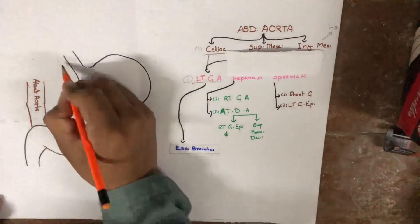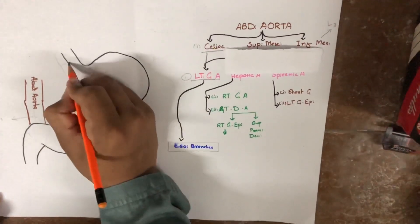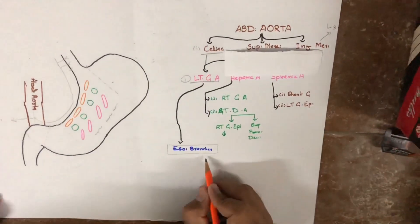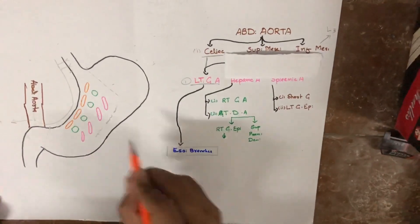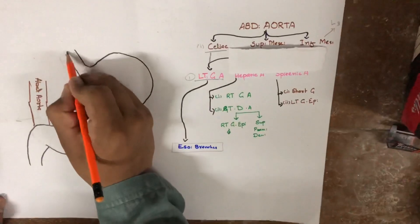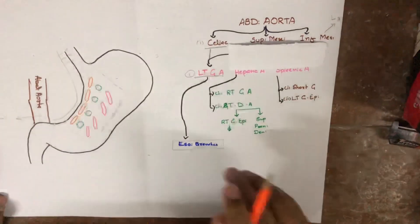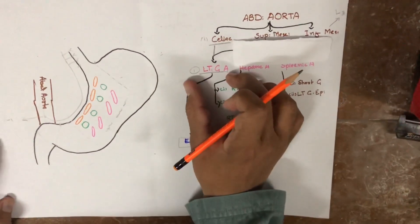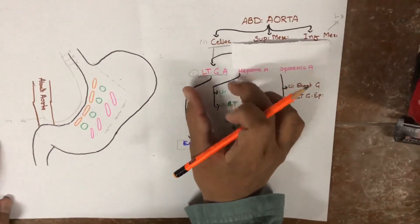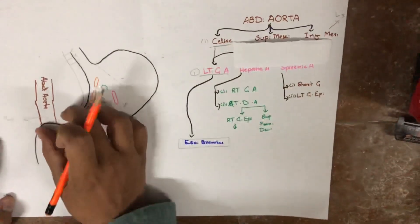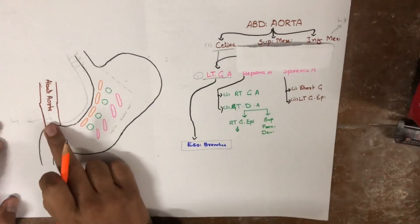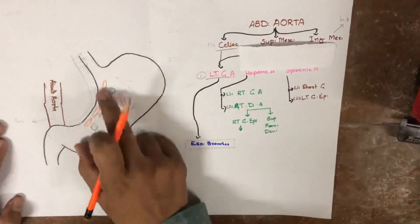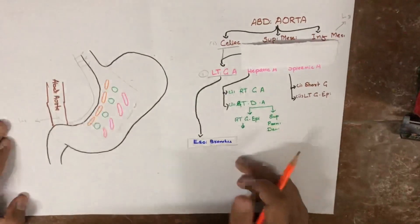The left gastric artery gives some branches to the esophagus, and these branches supply the abdominal part of the esophagus. So the first branch of the celiac artery supplies the left upper border of the stomach.